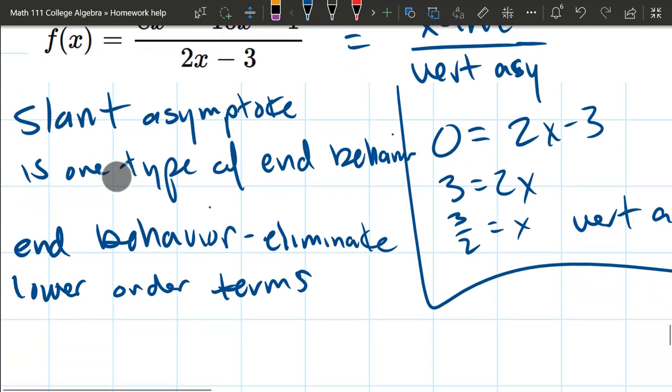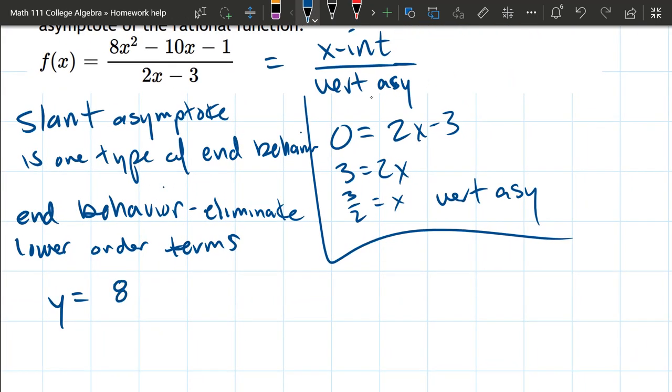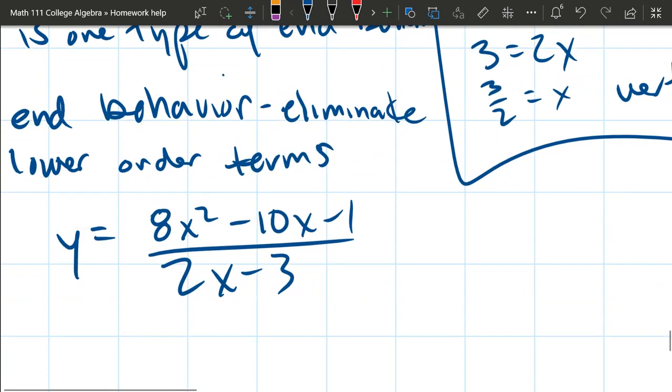So let's go ahead and write out our function. So our function is 8x squared minus 10x minus 1 divided by 2x minus 3. The reason that I do not write f of x is because what I'm about to do to this function is in no way algebra. So this is not going to equal f of x because I'm just going to start throwing away stuff. So end behavior, you want to think about what happens when x is big, like a million, a billion, a trillion.